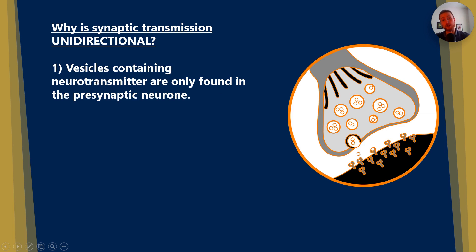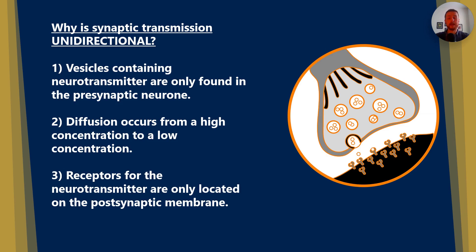So why is synaptic transmission unidirectional then? Well, firstly, vesicles containing neurotransmitter are only found in the pre-synaptic neuron. Secondly, diffusion occurs from a high concentration to a low concentration. And thirdly, receptors for the neurotransmitter are only located on the post-synaptic membrane.